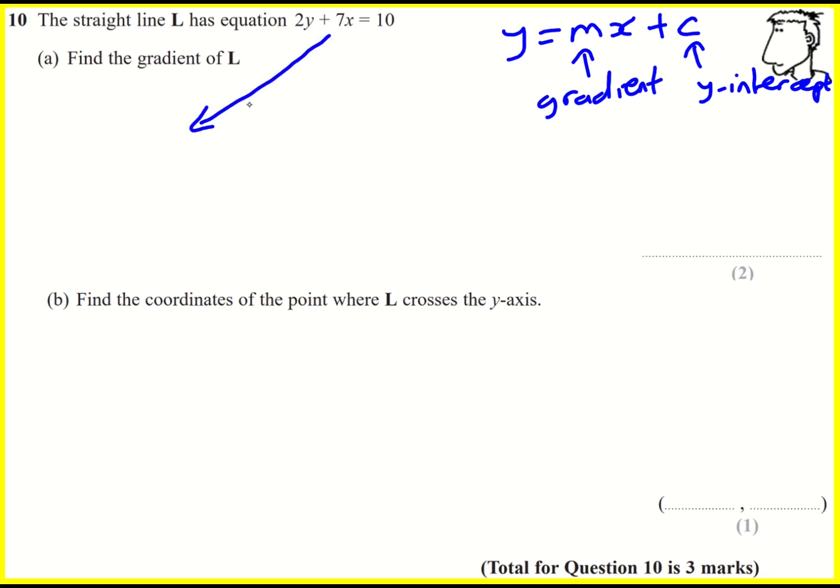So in our equation we don't quite have it in that form, we need to rewrite it. The first thing I can do is minus 7x from both sides, so 2y equals minus 7x plus 10. I'm trying to get y just on the left by itself. Then I can divide through by 2: minus 7x plus 10 divided by 2.